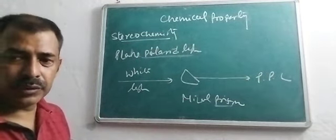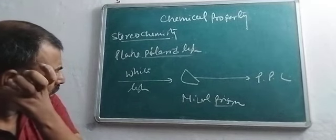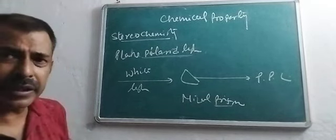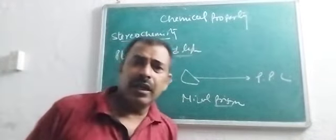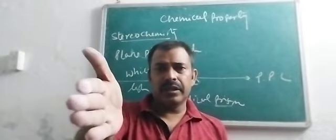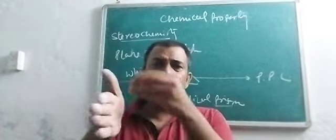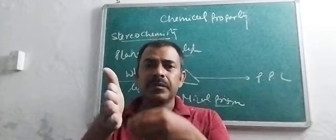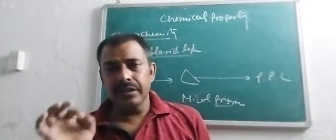What is the difference? When we pass light through a plane polaroid, if the light rotates in the direction parallel or anti-parallel, that is called plane polarized light.